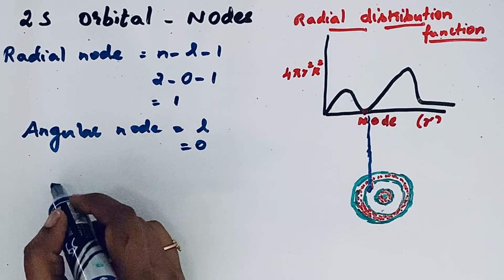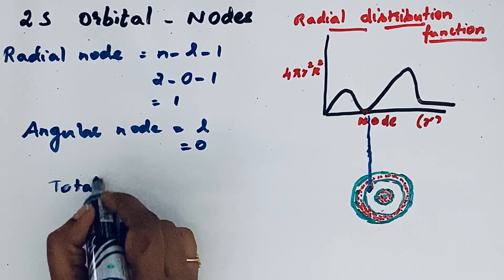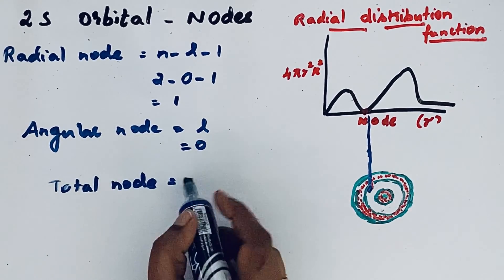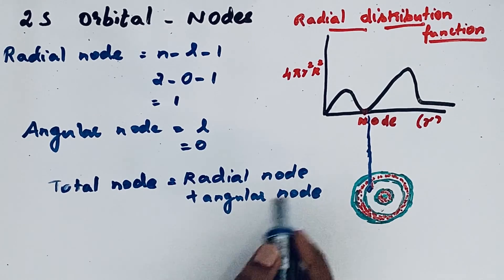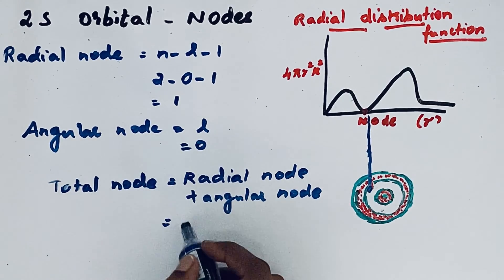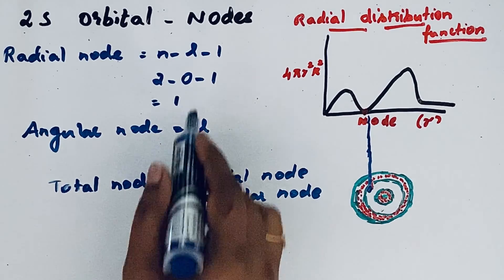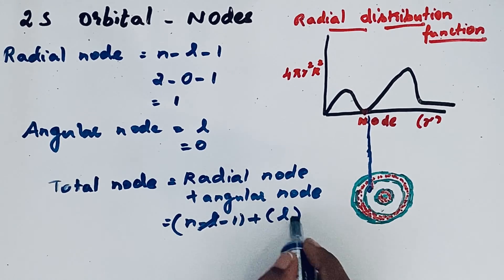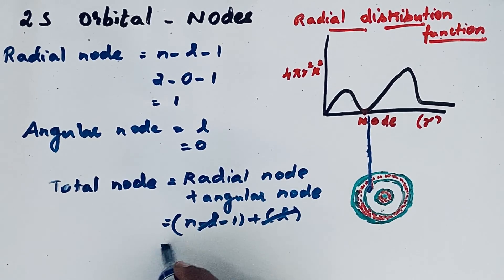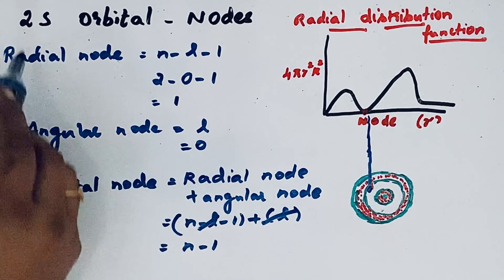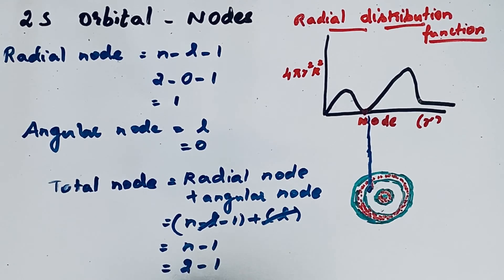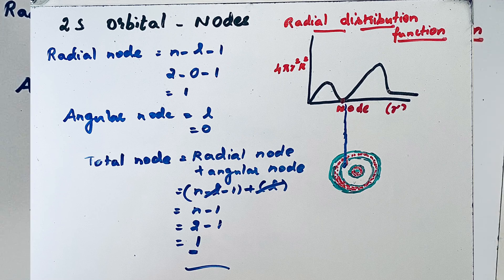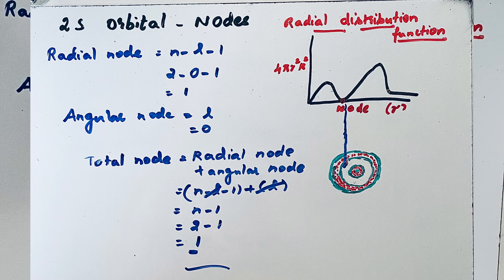Now let us find the total node. Total node is equal to radial node plus angular node. Radial node is n minus l minus 1, then for angular node, l. So we can cancel minus l plus l and minus 1. So n minus 1. The formula for finding the total node is n minus 1. For 2s orbital, n is equal to 2. So 2 minus 1, that means only one radial node is present and angular node is absent.